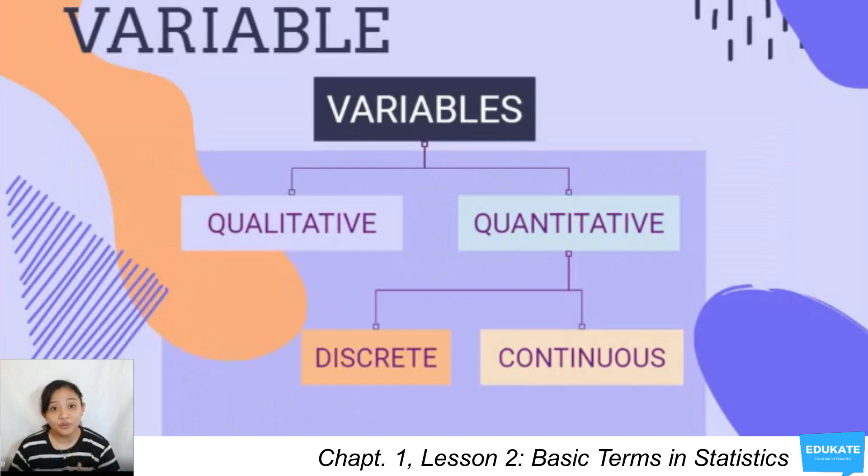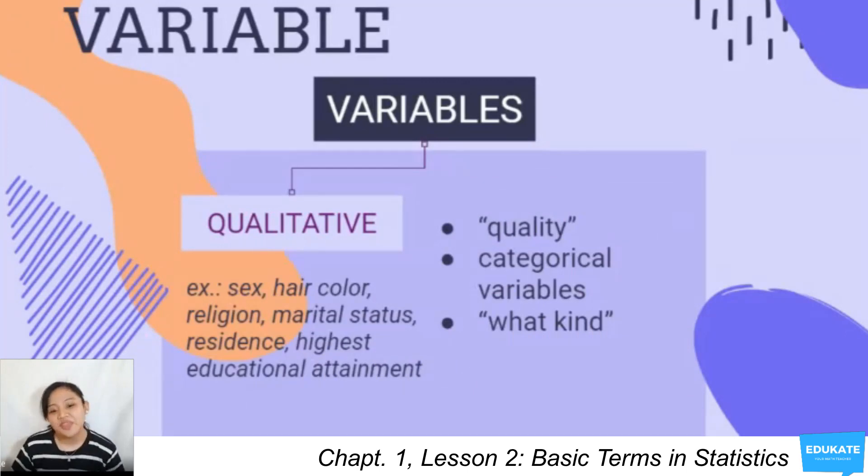Variables can be broadly classified as either qualitative or quantitative, with the latter further described into discrete and continuous types. So let's go to the first one, which is qualitative. From the word quality, qualitative variables are referred to as categorical variables. These variables answer the question, what kind?